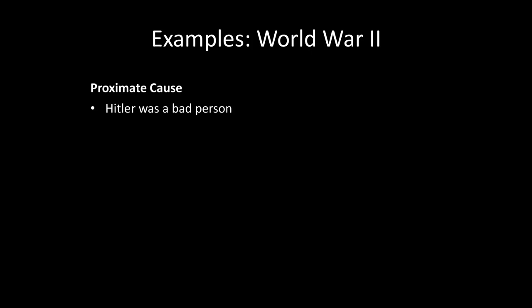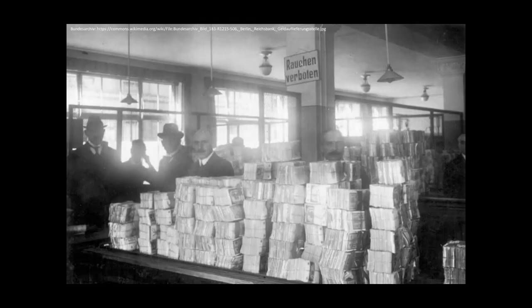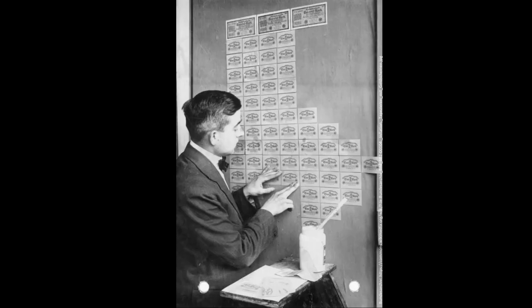Let's do another one — World War II. The proximate cause of World War II is that Hitler was a bad person and did all sorts of evil things in Europe. An underlying cause is that reparations from World War I bankrupted Germany, thereby allowing domestic institutions to fail. The economy of Germany was an absolute mess following World War I — there was hyperinflation that led to all sorts of strange behaviors. For example, those bricks you see are paper bills that are essentially worthless. The money became so devalued that people started using it as wallpaper.